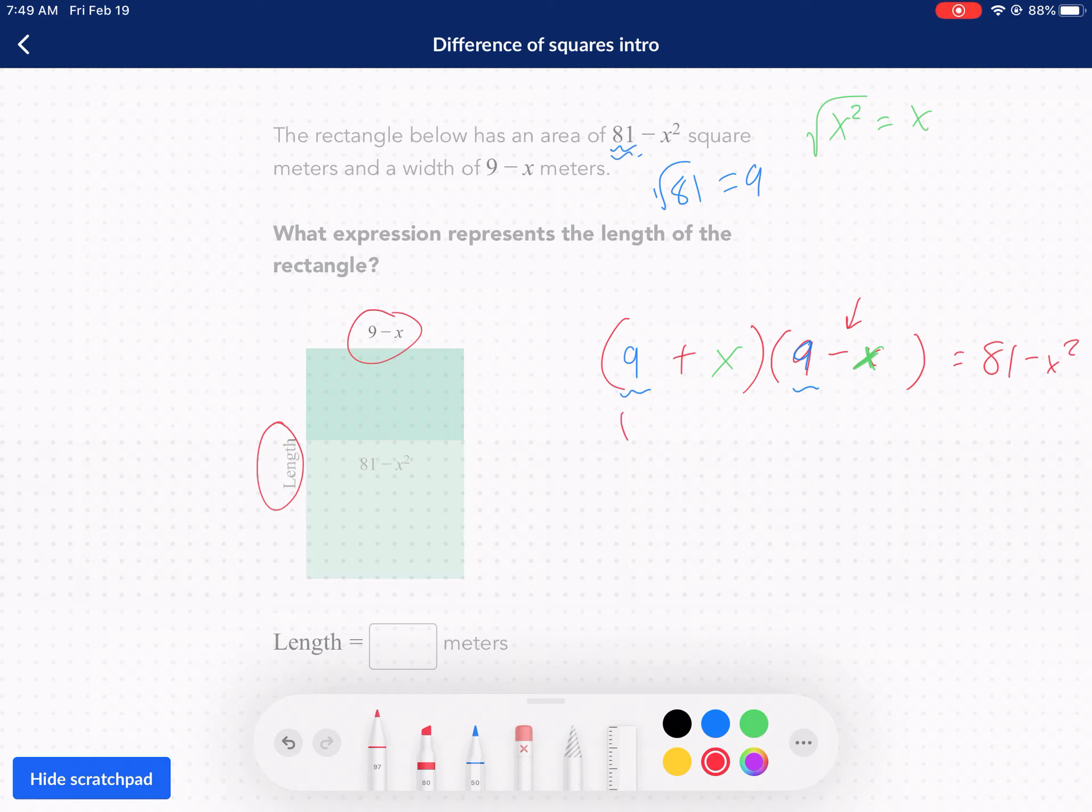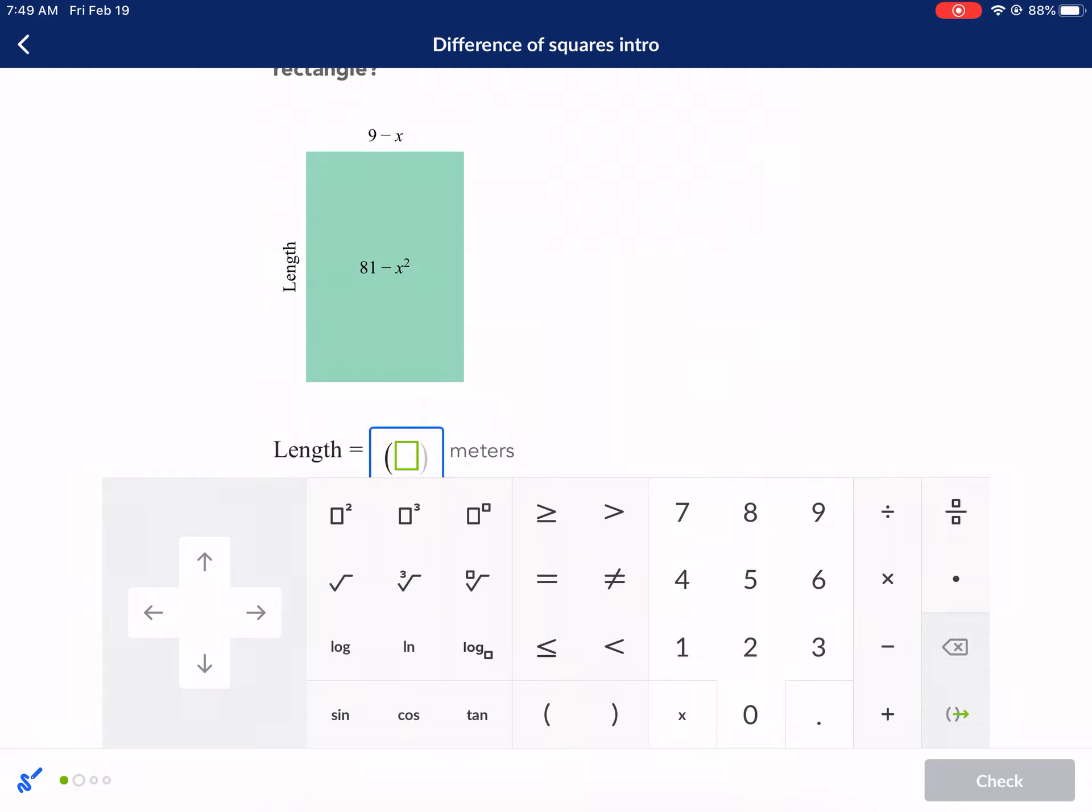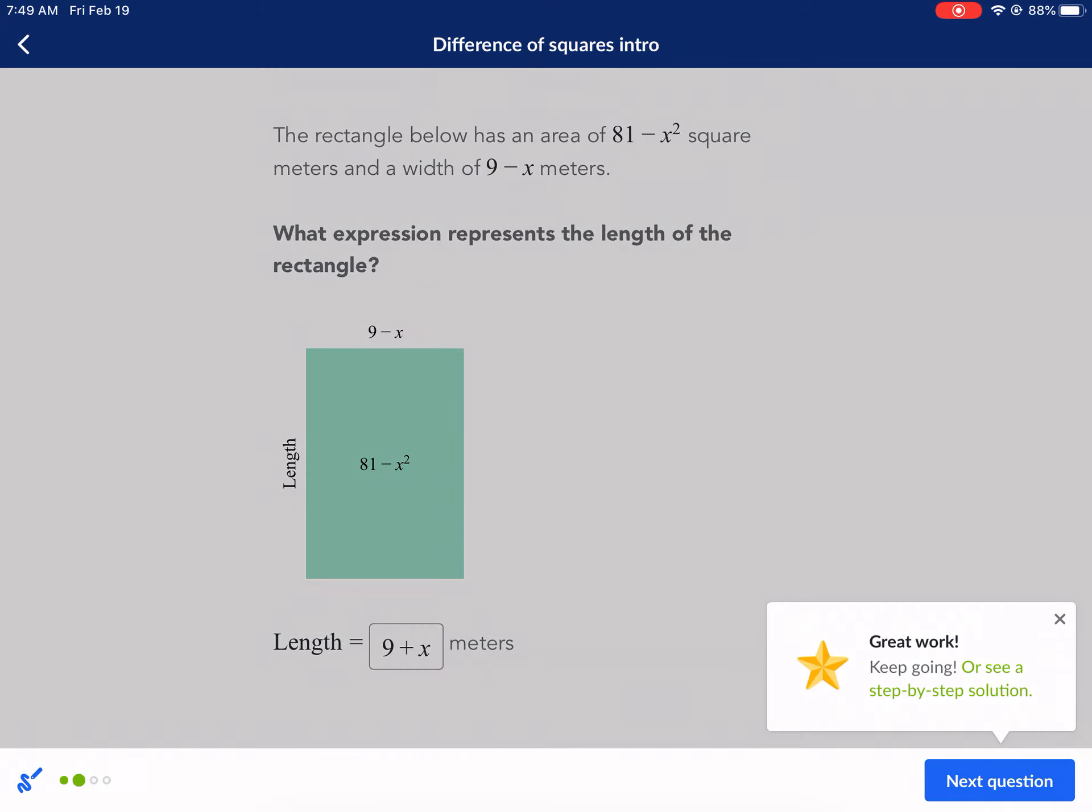We have nine plus x. This is going to be our length because we're told this is already our width. So nine plus x. I guess we can put in parentheses. It's not needed because it's by itself. So we're just going to put nine plus x, even though normally you'd put it in parentheses.